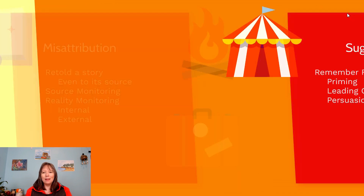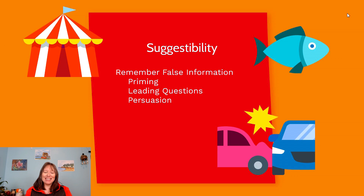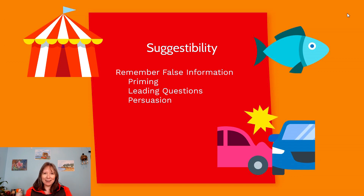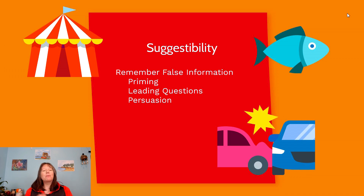We're not always aware our memories are imperfect, especially with suggestibility — the idea that we remember false information and believe it to be true. This can happen through priming: if someone says 'watch for the stop sign in this video,' at the end we say we definitely saw it. Or if someone says 'look for the color blue,' we pay so much attention to blue that it becomes what we remember most, even if it wasn't the main part. Priming really alters how we encode things.